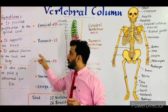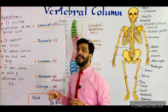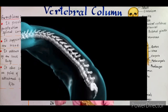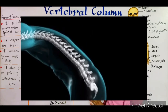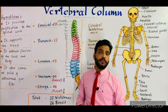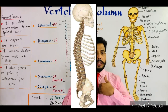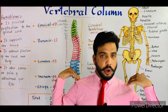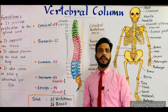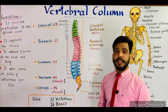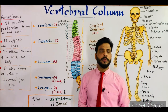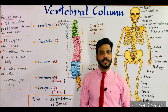The third function is that it allows flexion, meaning bending of the back and body. Whenever the body needs to bend or move, the vertebral column facilitates that movement. The fourth function is that it serves as a point of attachment for the ribs, as all ribs are attached to the vertebral column at the thoracic region. That covers the vertebral column — the number of vertebrae, the regions, and the functions. If you have any questions, please ask in the comment section. Thanks for watching and have a good day.